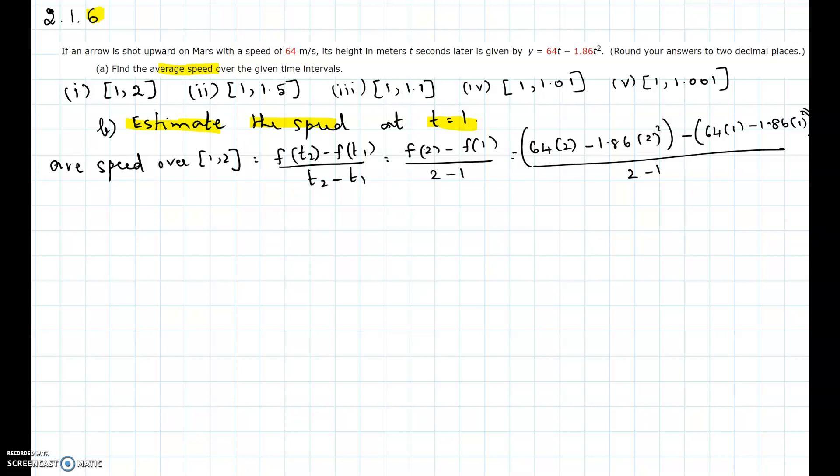Average speed over the interval 1 through 2 is f of t2 minus f of t1 over t2 minus t1. It is similar to the definition of slope of the line joining two points, which is y2 minus y1 over x2 minus x1.